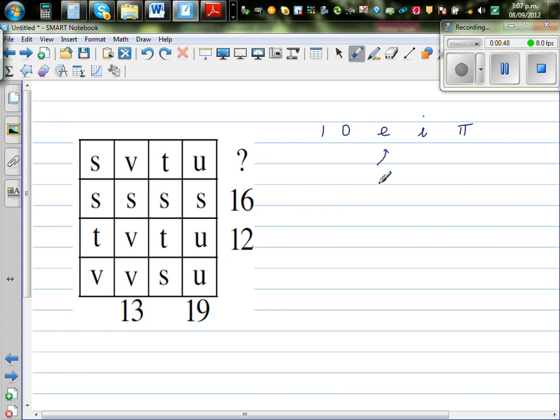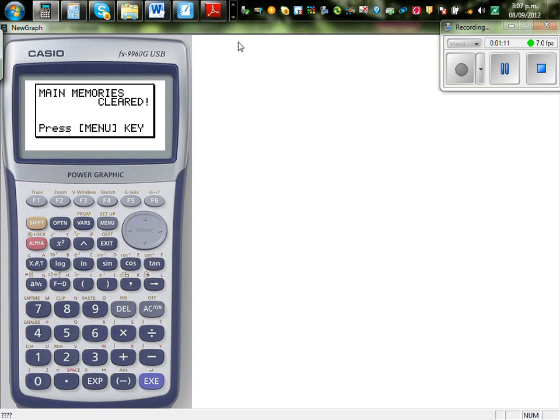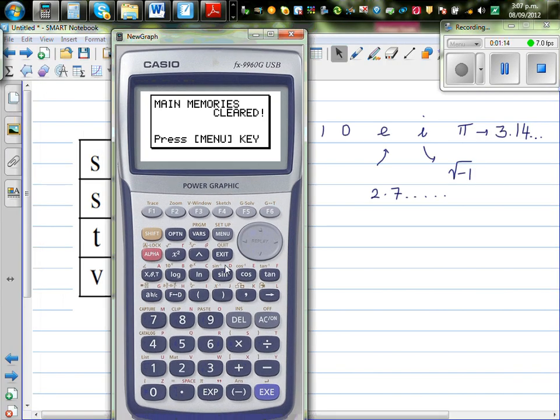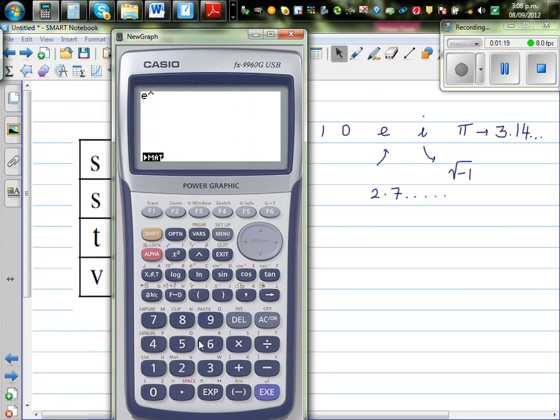E is 2.7, this number goes up to infinity. I is square root of negative one. And Pi is 3.14, and this also goes up to infinity. So let me show this first on the calculator. E is a number. So if you press shift E, this is a scientific calculator. If you type in 1 there, this is 2.7182.